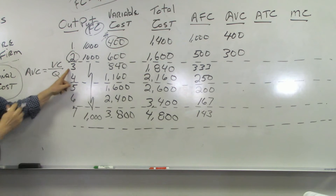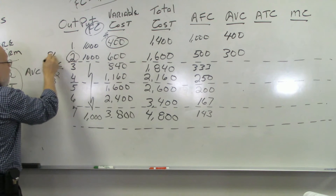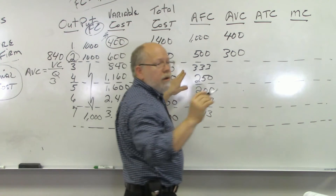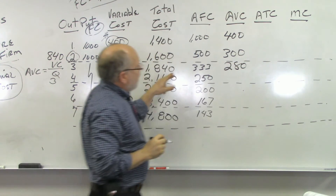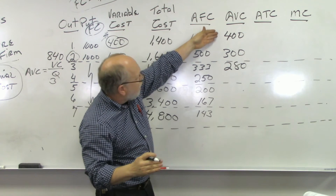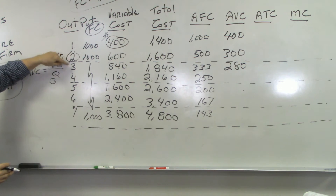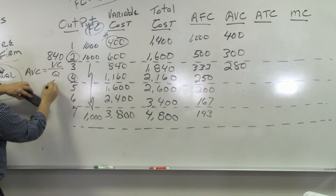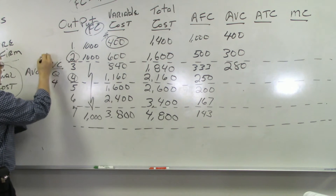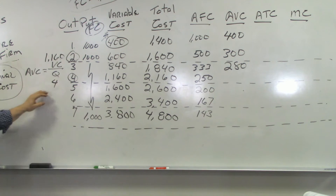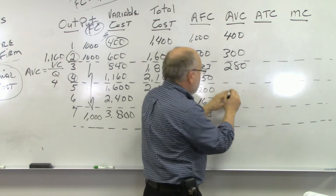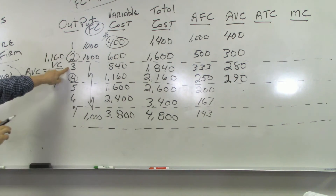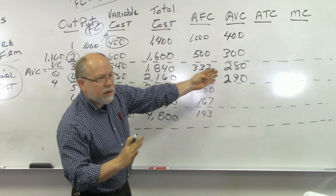At output 3 our variable cost is $840, and $840 divided by 3 gives us $280. Notice our average variable cost started high, came down at output 2, and comes down more at output 3. At output 4 our variable cost is $1,160, and $1,160 divided by 4 gives us $290. It bottomed out at output 3, and now average variable cost is starting to inch its way back up.